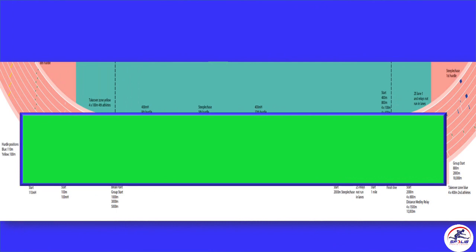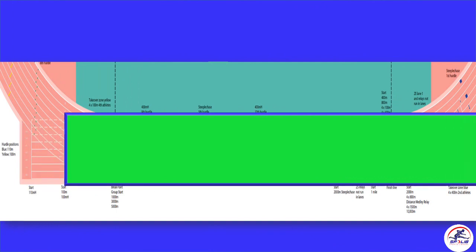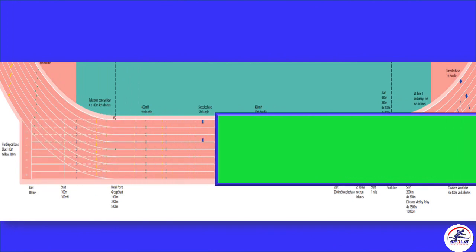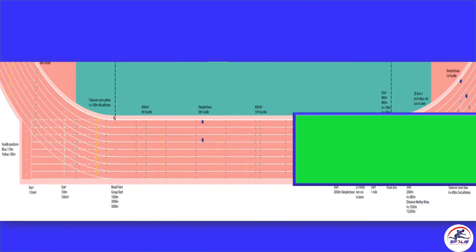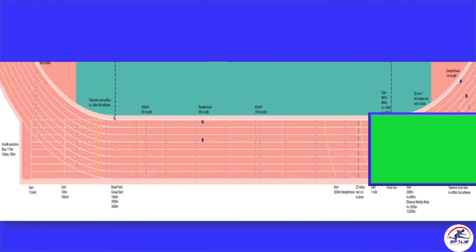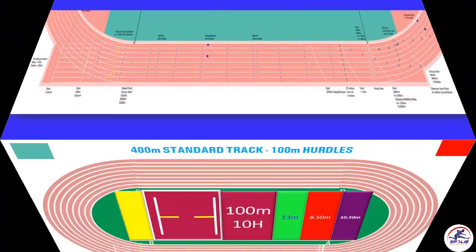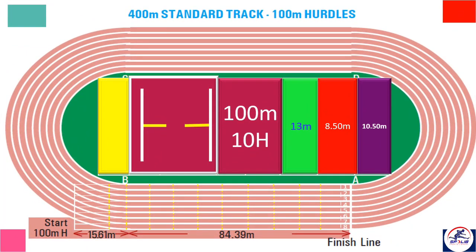This is the World Athletics 400m standard track marking plan 2019 home stride image. Now we can see how to mark 100m.